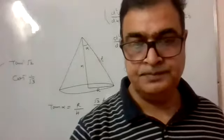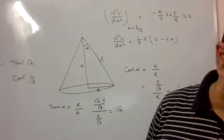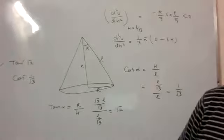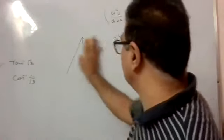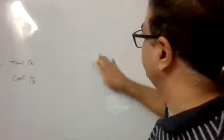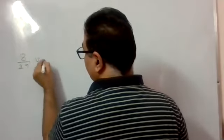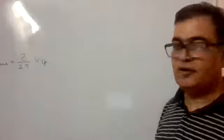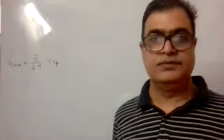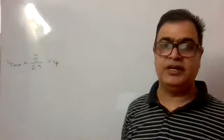Another very important question — note please. This appeared in the board exam 6 times and it is an NCRT problem. Show that the volume of the largest cone that can be inscribed in a sphere of radius capital R is 8 by 27 the volume of the sphere. Maximum volume of the cone will be 8 by 27 the volume of the sphere.